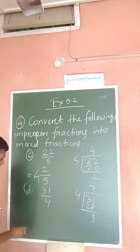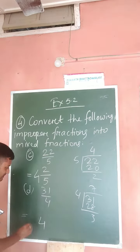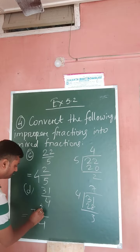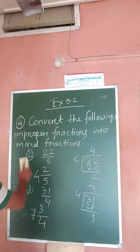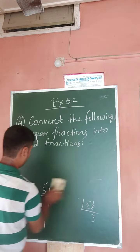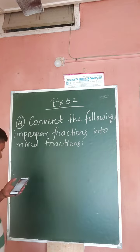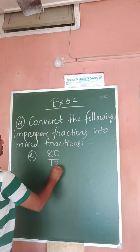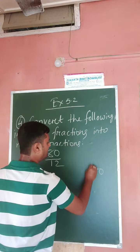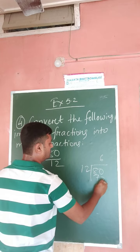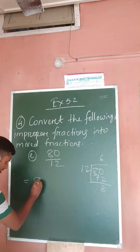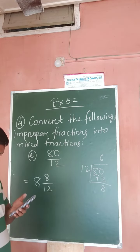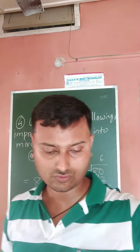That four remains the same as the denominator, the quotient is four, and the remainder is — sorry — three. The next one is 80/12, which we will cover in the next video.